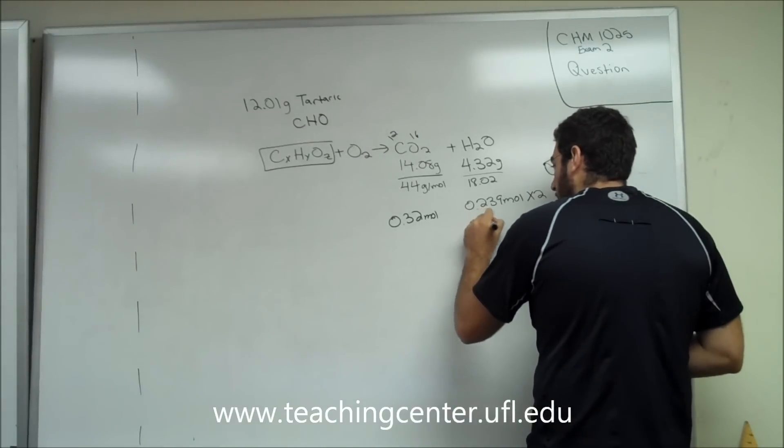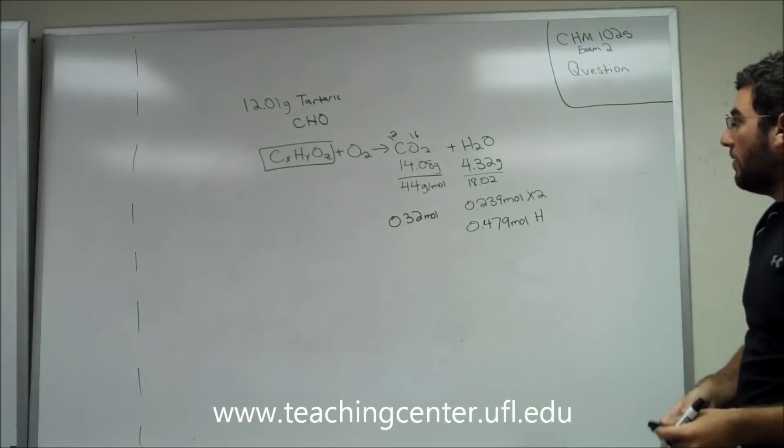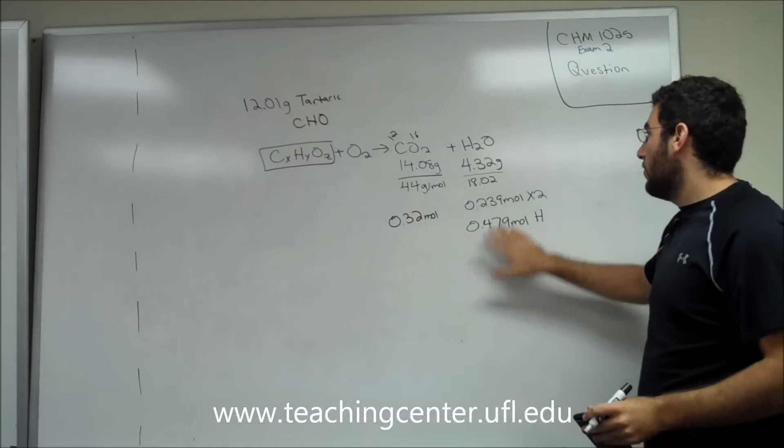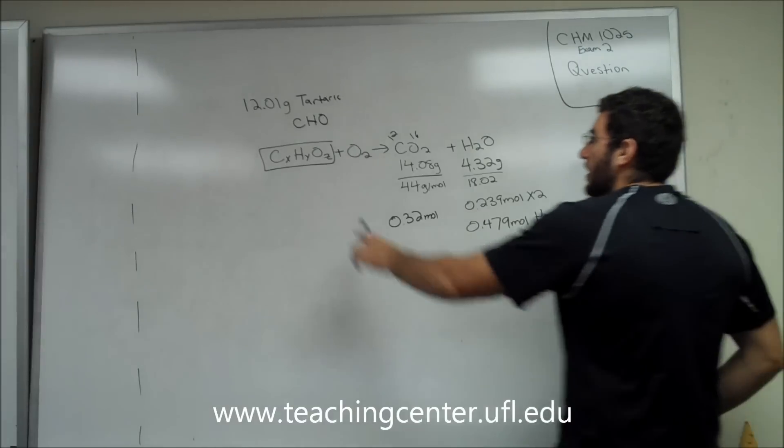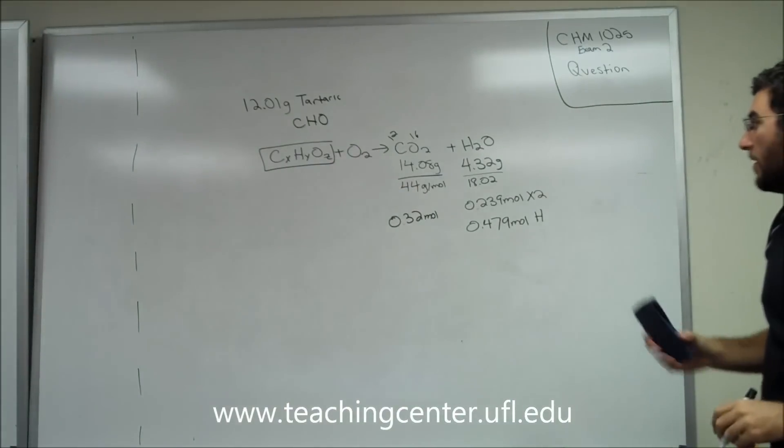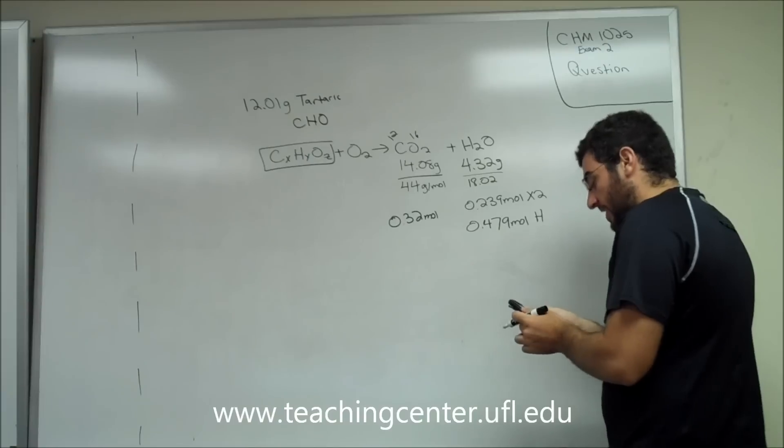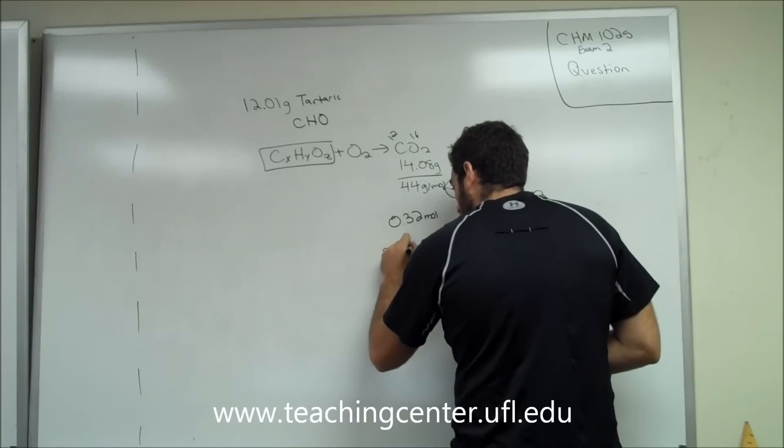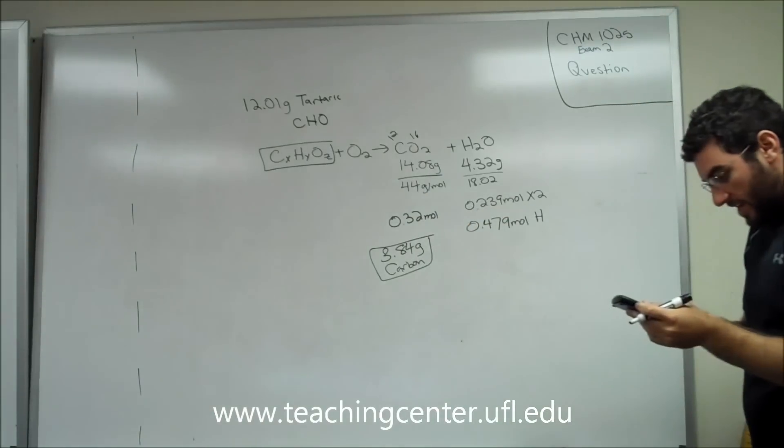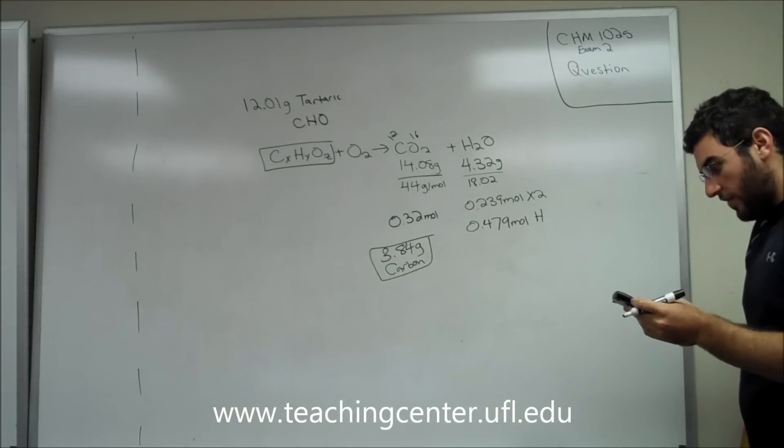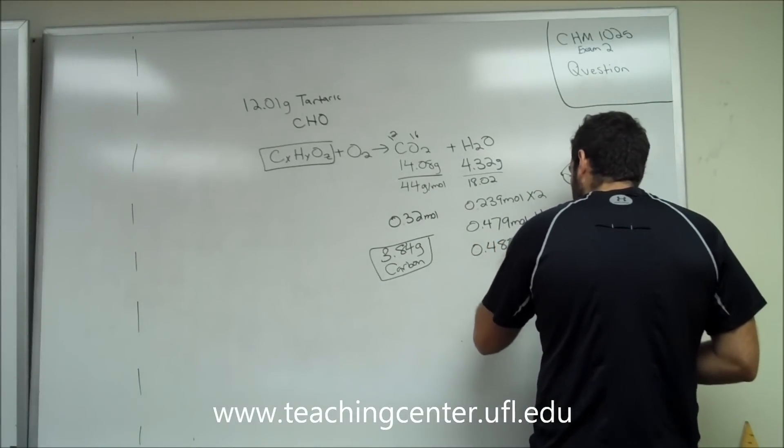0.479 moles hydrogen. So in order to figure out how many grams of carbon and hydrogen, once we've figured out the moles of carbon and the moles of hydrogen, let's convert back to our grams of carbon and our grams of hydrogen in order to use this 12.01 number. So 0.32 times 12 gives us 3.84 grams carbon total. If we do 0.479 times 1.01 for hydrogen, we have 0.483 grams hydrogen total.